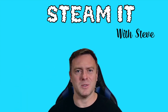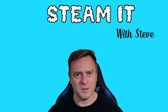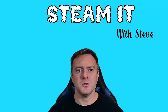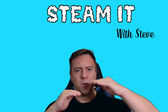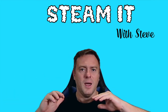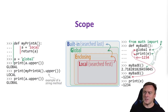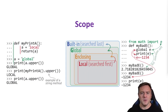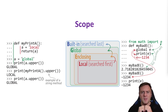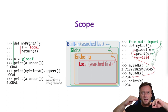Hello and welcome back to Steam with Steve. Today we're going to talk about a really important concept inside of Python which is scope. Scope determines where a variable pulls its data from when it's been stored in memory. It's really important that we understand there are four different levels of scope, so let's unpackage that just a little bit at the start.